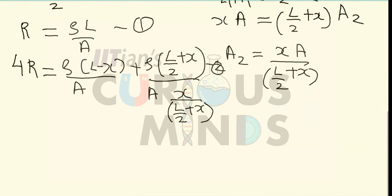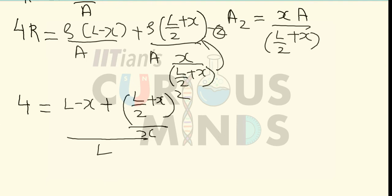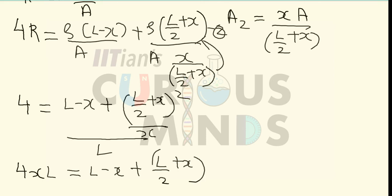Taking the ratio of the two equations, the ρ/A terms cancel out. The ratio gives 4 equals L minus X plus (L/2 plus X) squared divided by X, all divided by L. Rearranging, we get 4XL equals L minus X plus (L/2 plus X) squared.